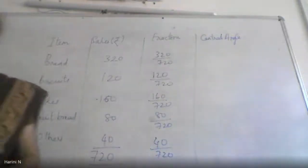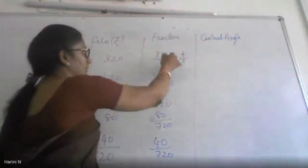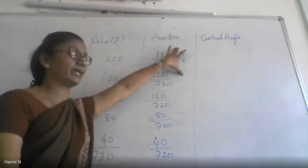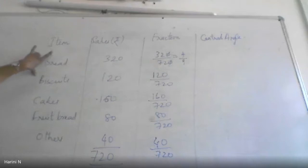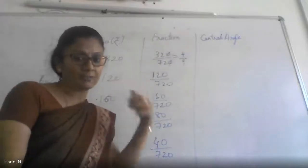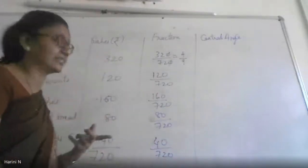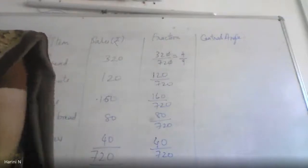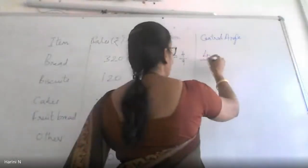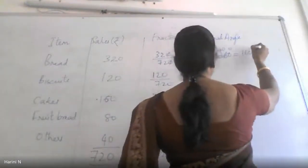The central angle will be decided based on this. 320 by 720 reduces to 4 by 9 — because 8 fours are 32 and 8 nines are 72. So 4 by 9 is the fraction of the circle to represent bread. 4 by 9 of 360 degrees equals 160 degrees. So your central angle should be 160 degrees.